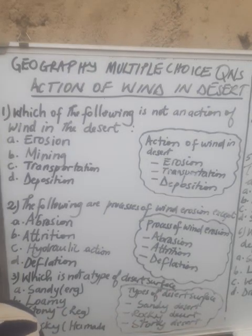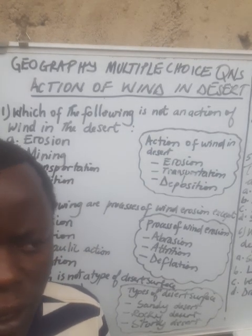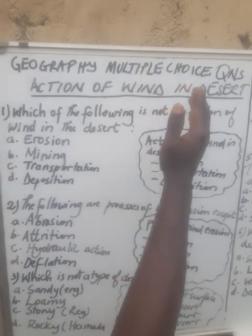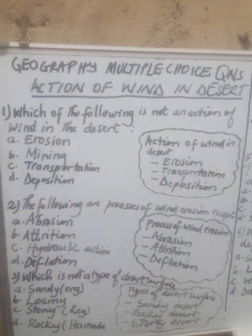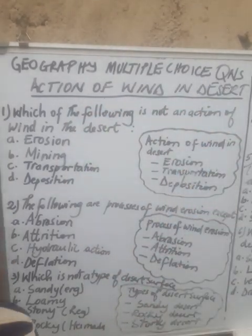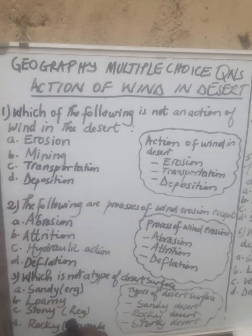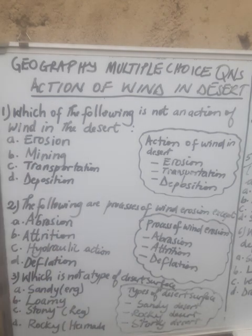Welcome once again to Keep on Learning class. My name is Teacher Emmanuel, a teacher of geography. Today we are going to do geography revision where we are basically going to discuss different revision questions relating to the action of wind in desert. This is content for senior six students to help them revise, especially those preparing for the upcoming national exam. Let's start with question number one.